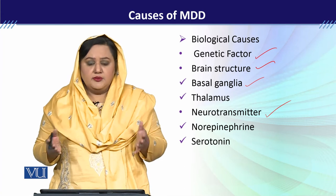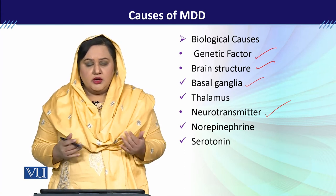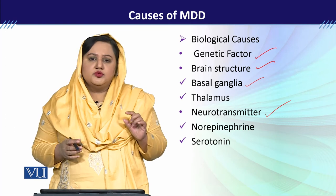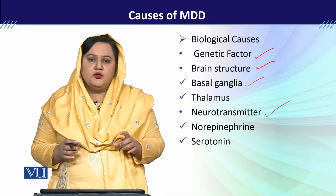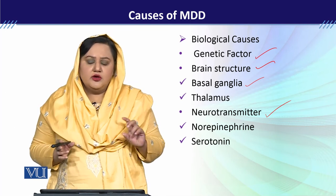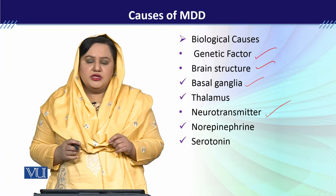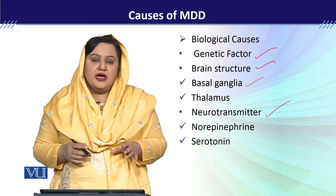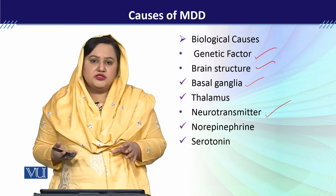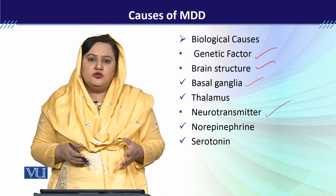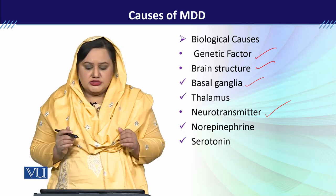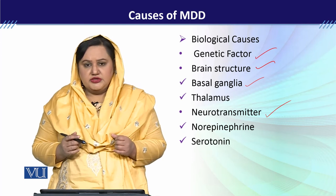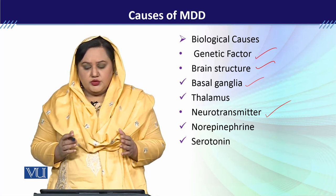Then we talk about the thalamus. The thalamus is positioned between the prefrontal cortex and the basal ganglia. Generally, hyperactivity of the thalamus has been observed in patients with depression.